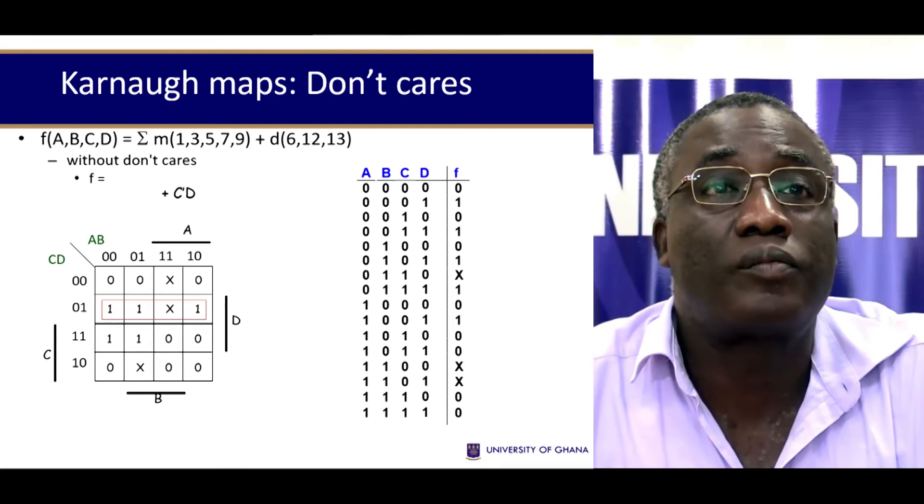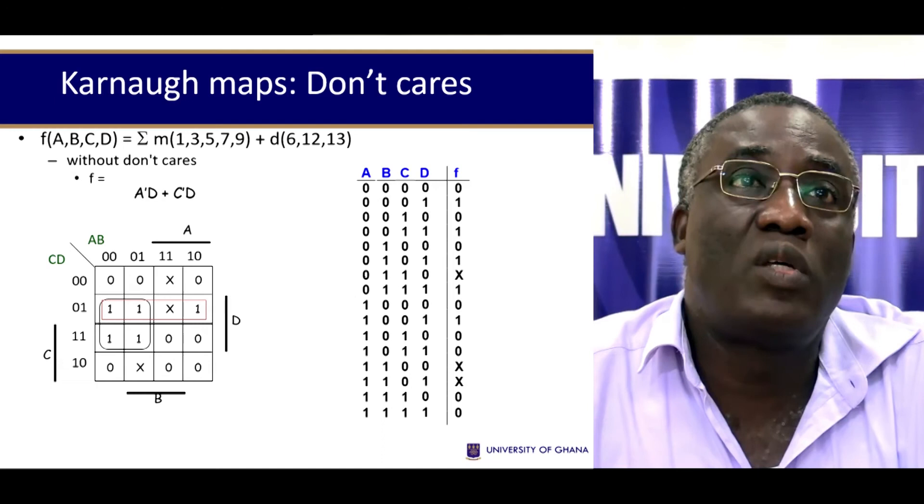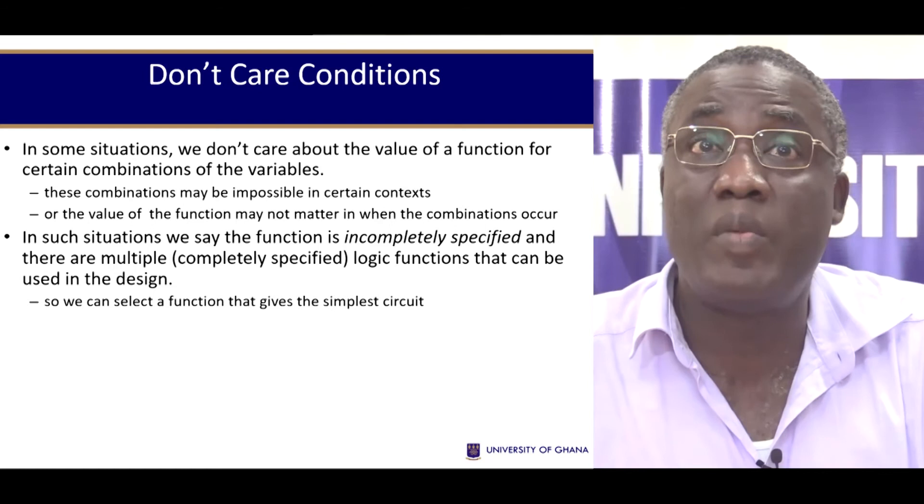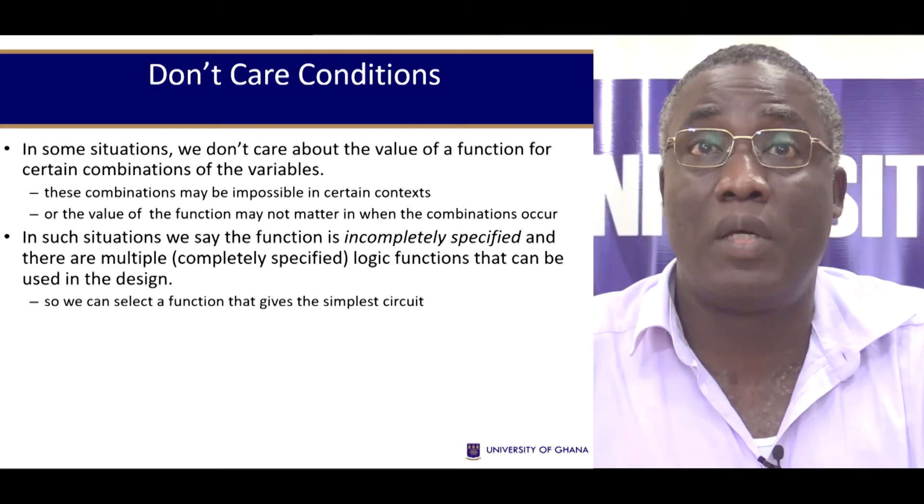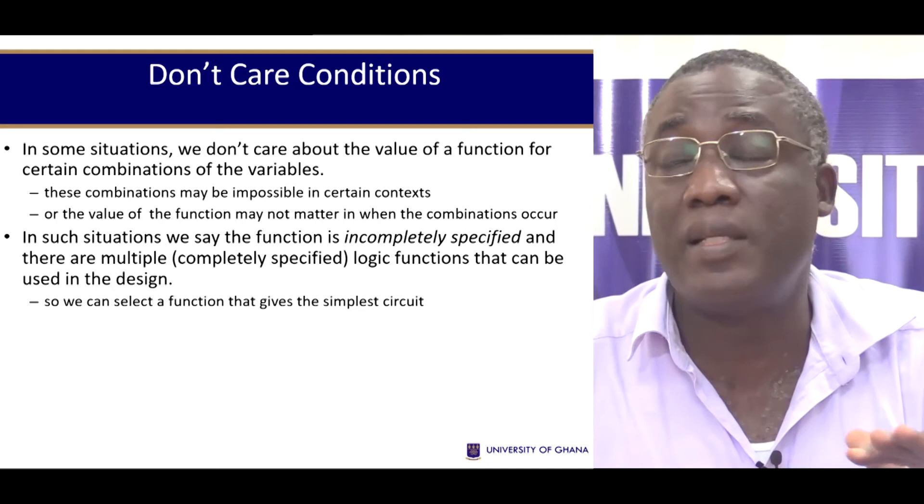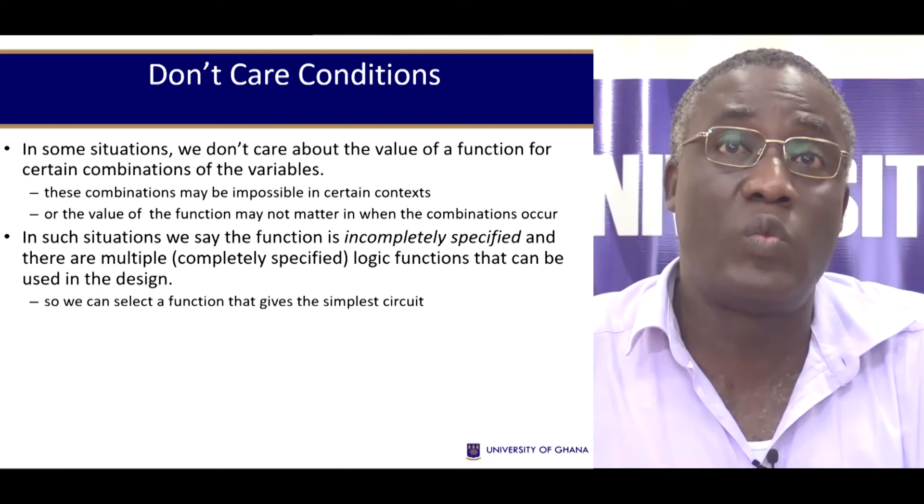So the don't care is a useful knowledge to have and that helps to minimize functions. If you don't care, you can treat this as a 1 and then you can group this together. In some situations we really don't care about the value of a function for certain combinations of variables. In such situations we say the function is incompletely specified and there are multiple logic functions that can be used in the design. So we select a function that gives us the simplest circuit as we desire. When constructing the terms in the simplification process, we can choose to either cover or not cover the don't care positions.